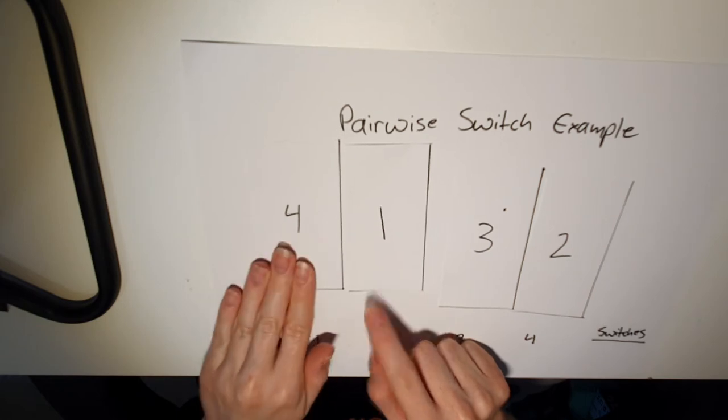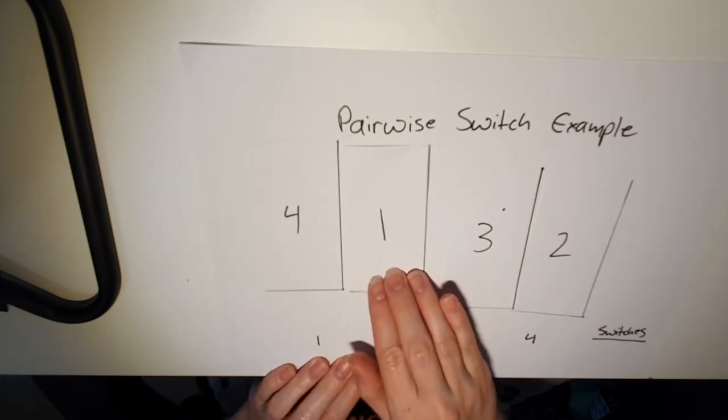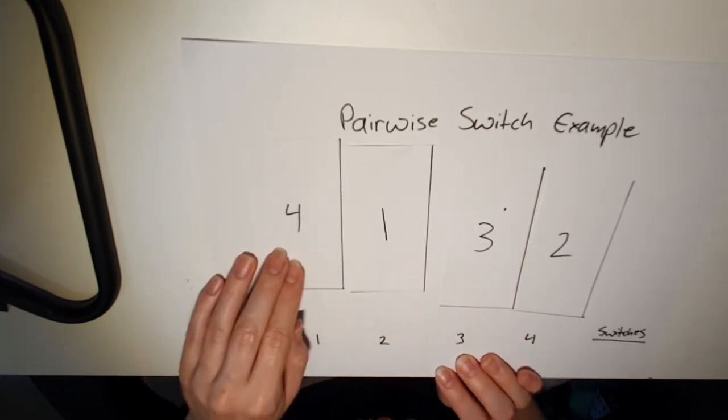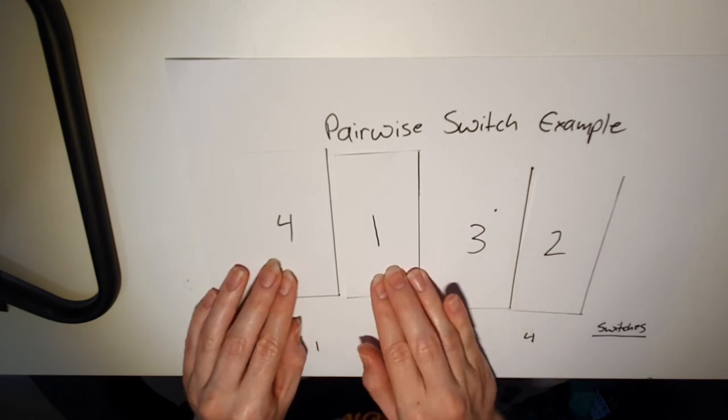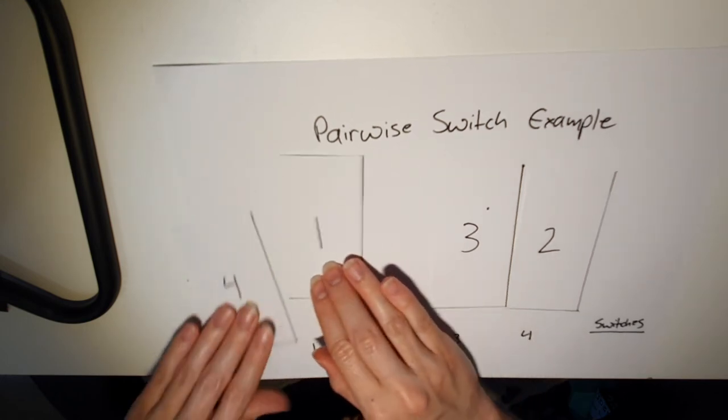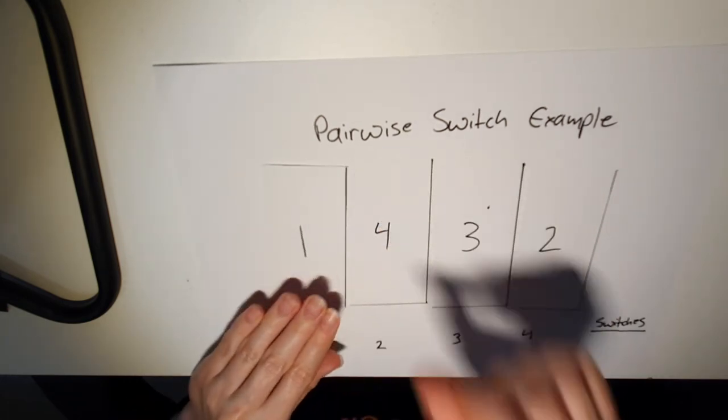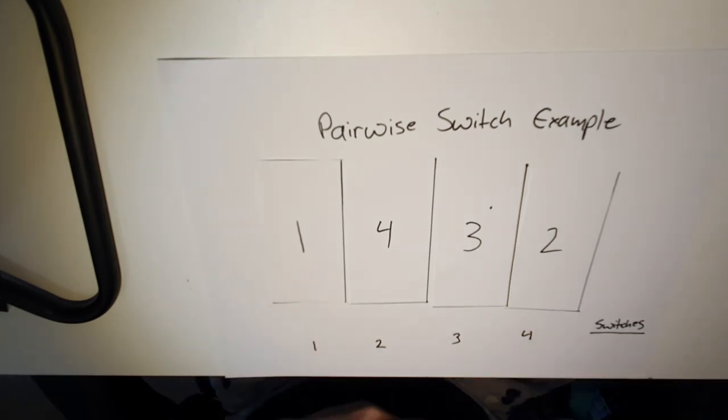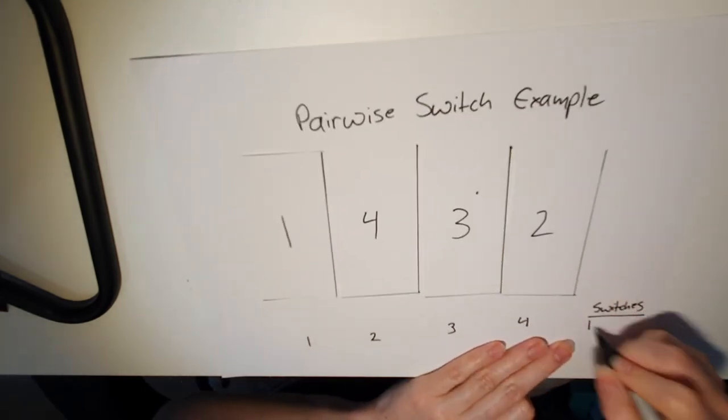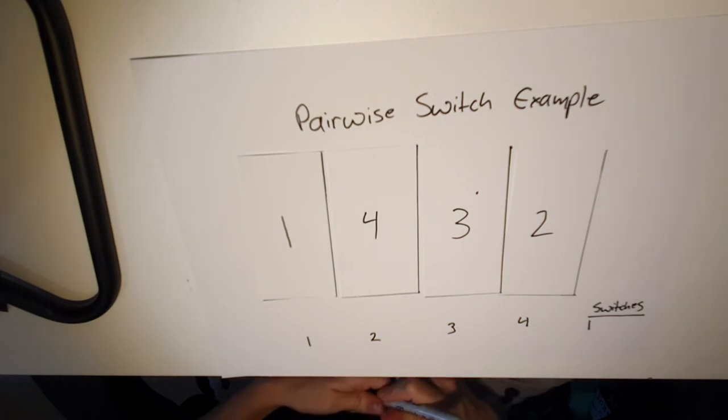Then we check if the left card is less than the right card. Is four less than one? No. So we swap them around. And because we made a switch, we're going to write a one down here for our first switch.